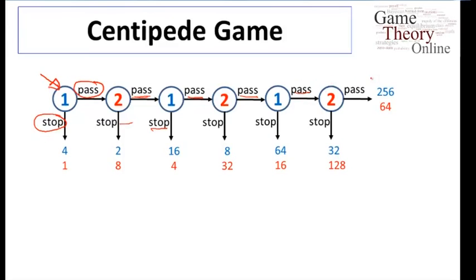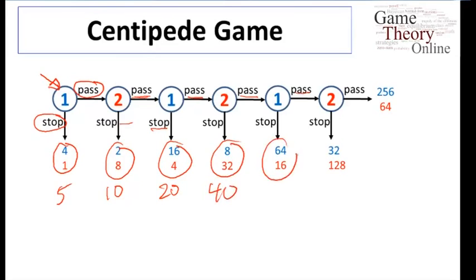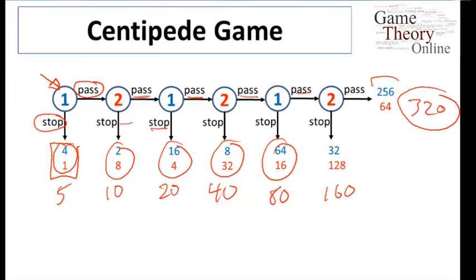The interesting part about the centipede game is the structure of the payoffs. When we look at the total payoffs, we have totals of 5, 10, 20, 40, 80, 160, and 320. As players keep passing, the payoffs are doubled every time. If the players ended the game at the beginning, they get 4 and 1. If they keep moving all the way, they get 256 and 64. The blue payoff is the first player and the red payoff is the second player in each entry.